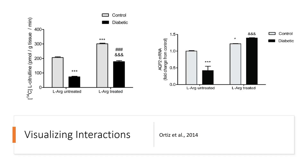Let's quickly go over an example of a non-significant and a significant interaction. When there's a significant interaction, the effects of one variable may depend on the level of another variable. Graphically, we'll see crossed or non-parallel patterns on our graph. A non-significant interaction suggests that the effects of each variable are somewhat independent, and we'll see bars or lines that appear more parallel.